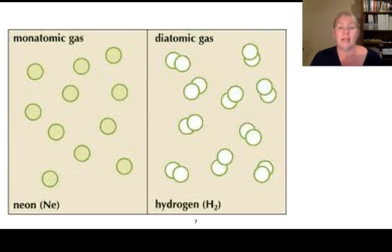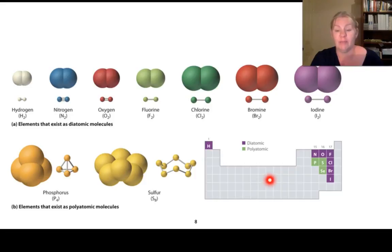Here we've got some examples of monatomic gases and diatomic gases, so neon will form a monatomic gas. Hydrogen, H2, will form a diatomic gas. At the bottom here we have a periodic table, and we've got some polyatomic molecules and at the top some examples of diatomic molecules.